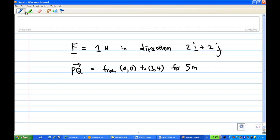First of all, the force of 1 N can be written as: the direction is 2i plus 2j, and you divide by the length to get a unit vector. This will give you a force of 1 N.